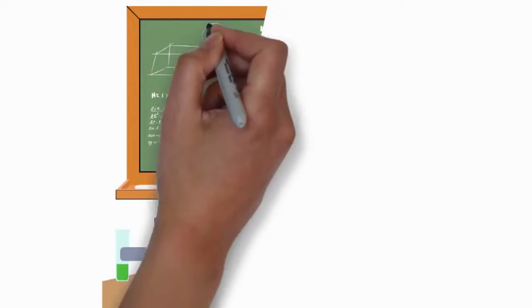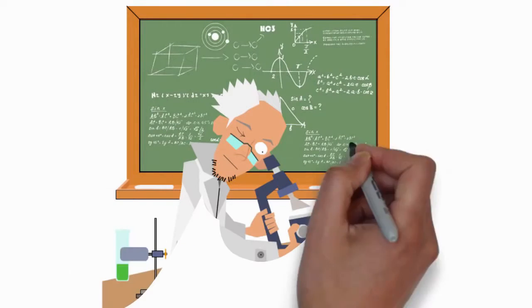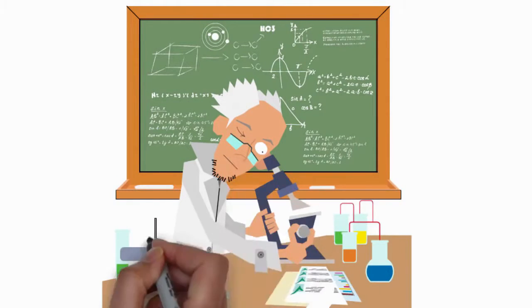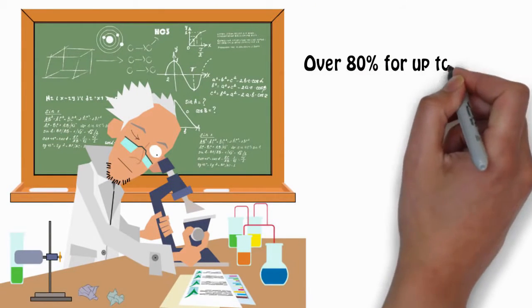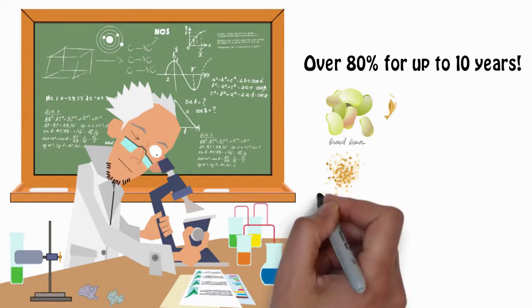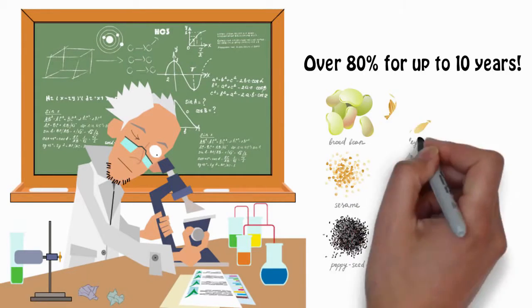Seeds that are scientifically dried to their exact ideal moisture level using highly specialized drying and testing equipment can still sprout with over 80% germination rates after being stored for up to 10 years.